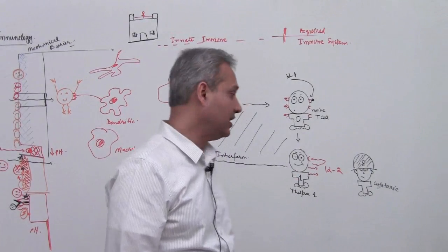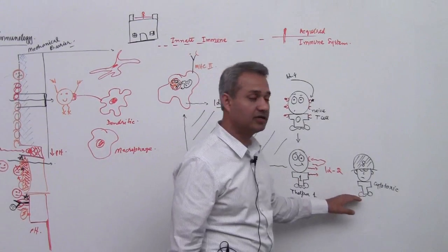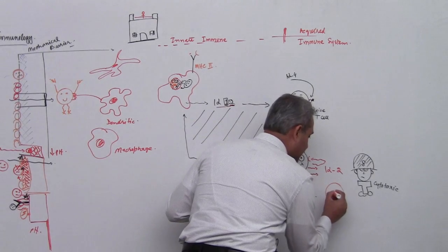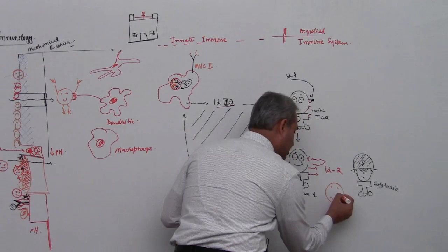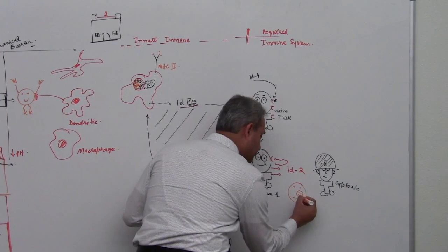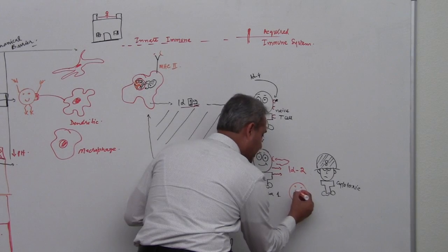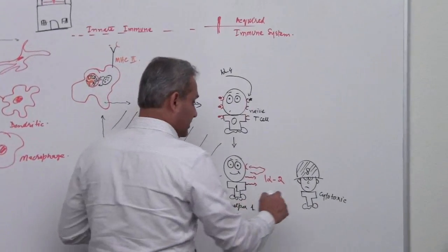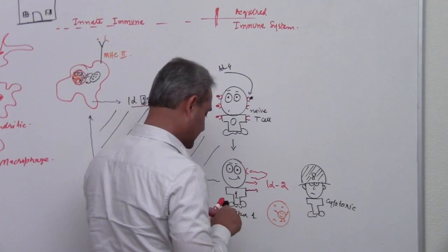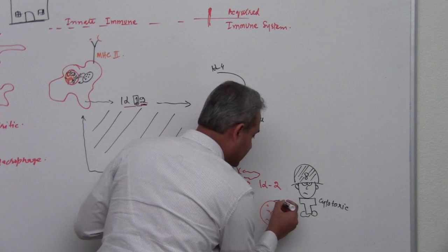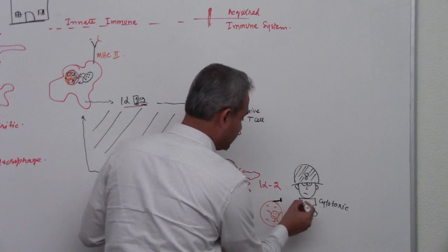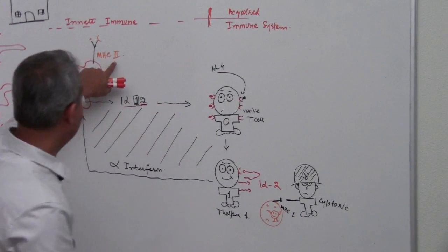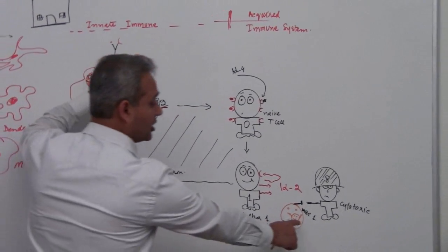Now, cytotoxic T cell - again we'll talk more about it - what he does is he would connect with the cells which have gotten this pathogen hiding in there. If I try to make a cell here, this is a really sad cell because this little pathogen is sitting in it and having fun. This cytotoxic T cell can detect this situation by connecting to something called MHC 1. Please remember we talked about MHC 2 over here. Now we're talking about MHC 1.